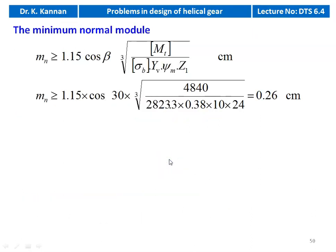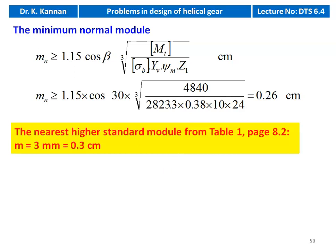We calculate the minimum normal module: M_n ≥ 1.15 × cos(beta) × ∛[MT(design) / (sigma_b × YV × psi_m × Z1)]. Substituting: M_n ≥ 1.15 × cos(30°) × ∛[2955.1 / (2823.3 × 0.38 × 10 × 24)] = 0.26 cm. We take the nearest higher standard module from table 1, page 8.2: M_n = 3 mm or 0.3 cm.